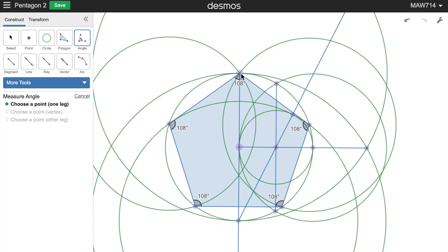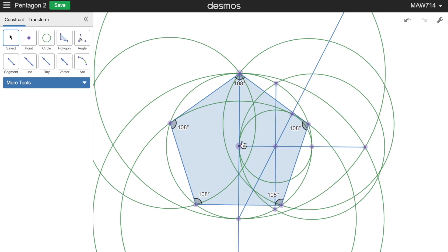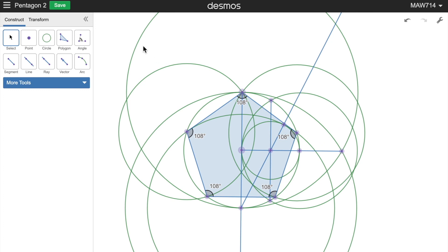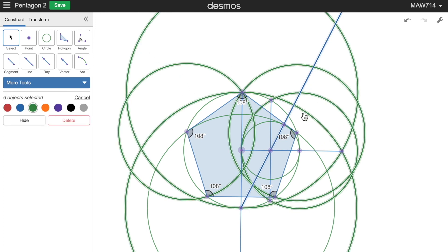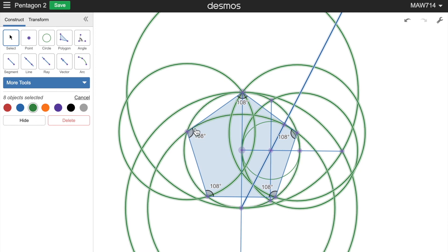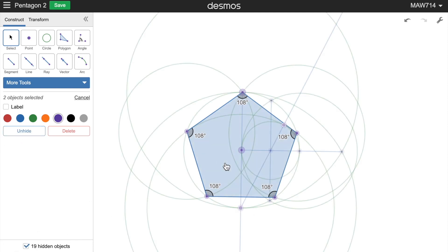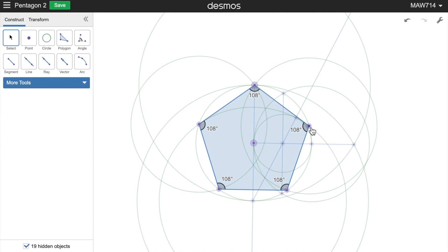Now I'm just going to zoom out a little bit and select everything that we don't need. And there we go. That's our pentagon.